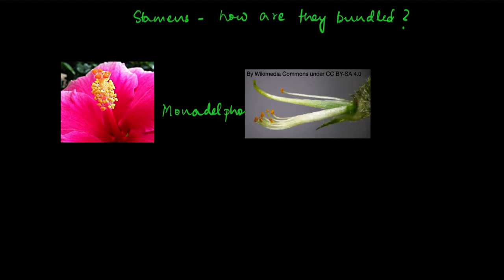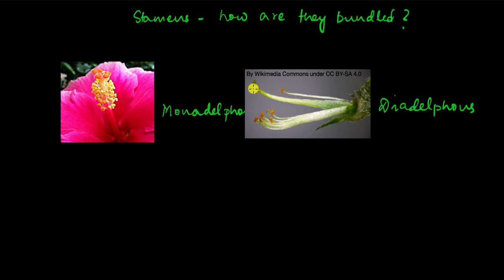If there are two bunches, they will be called diadelphous. In this flower, right in the middle is the gynoecium, and on either side of it you can see the stamens. Here there is one bundle, and here there is another bundle that actually consists of only one stamen, but it's separate — it's not together with the other bundle. So we say it has two bundles, and the term given to it is diadelphous.